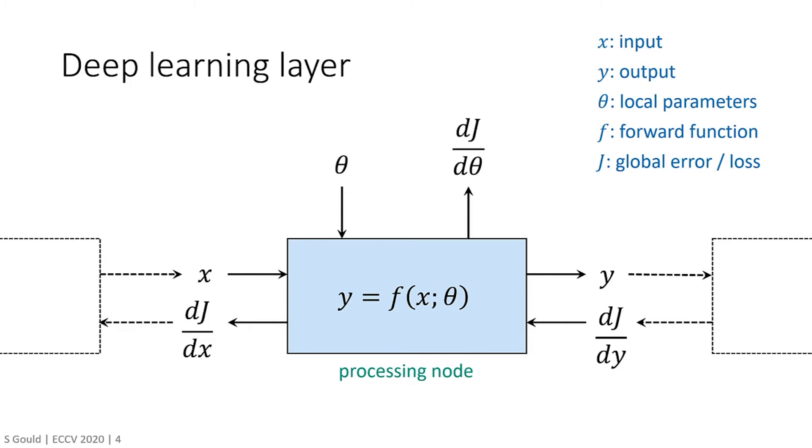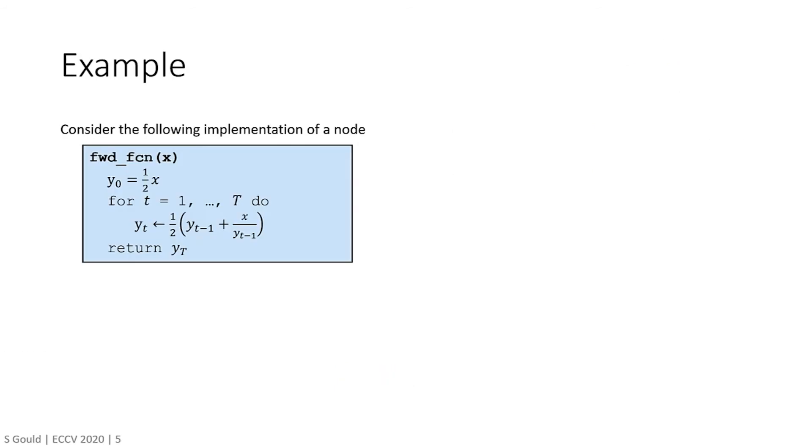The second idea is that the implementation of the forward and backward pass can be decoupled. While automatic differentiation is an amazing tool that allows us to write forward functions and have the gradients automatically computed, this can be inefficient when the forward function cannot be expressed in closed form. Consider a simple toy example of computing a square root. This can be done using the well-known Babylonian algorithm as shown on the slide.